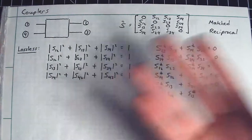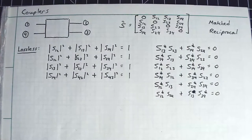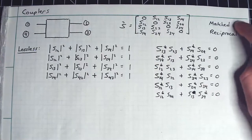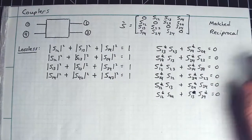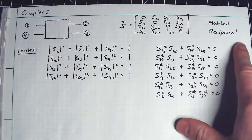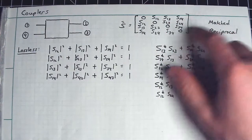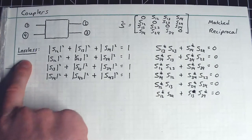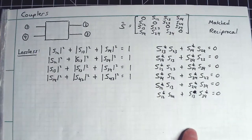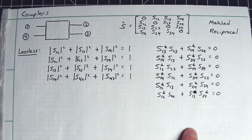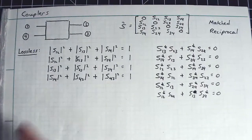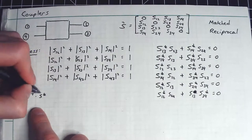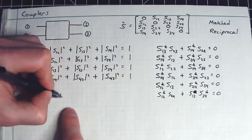What we're going to do now is look at a generic four-port network. I've written out the S matrix here, and we've imposed the condition of being matched, so all of the diagonals are zero. We've imposed the condition of being reciprocal, so all the off-diagonal elements equal each other. Now we're going to see what happens if we also impose the condition of being lossless, which requires that S-transpose times S-conjugate equals the identity matrix.